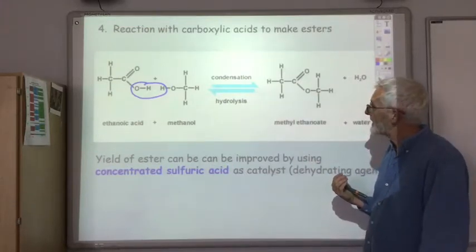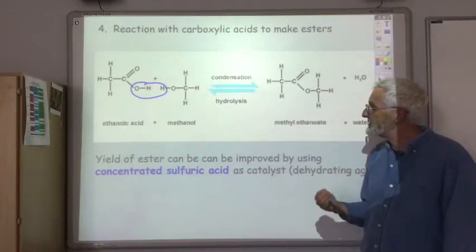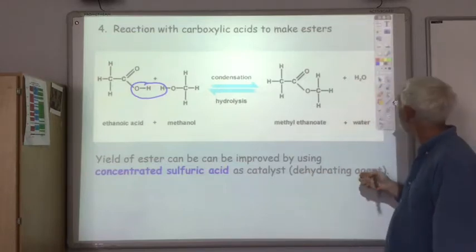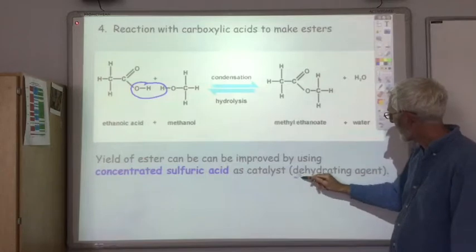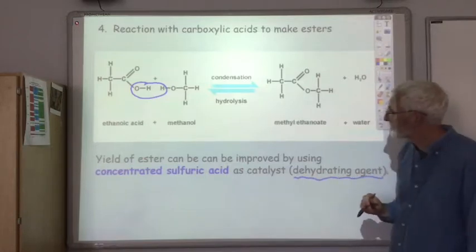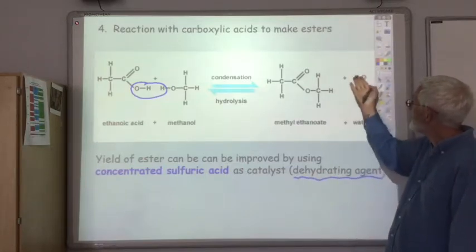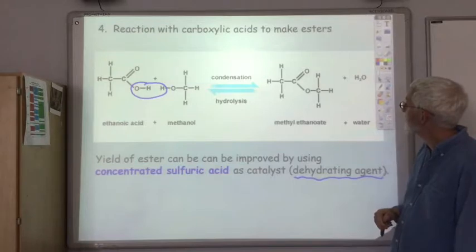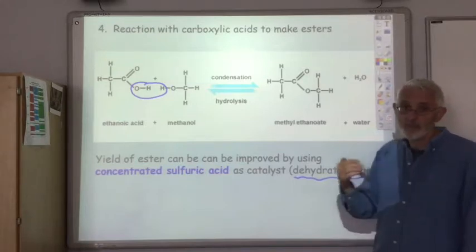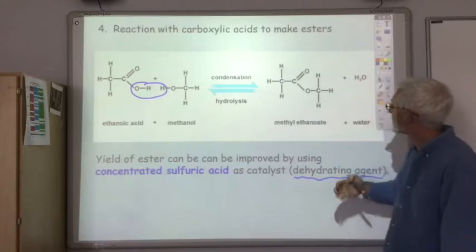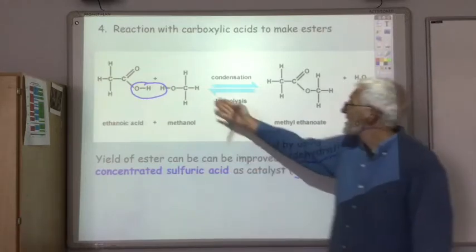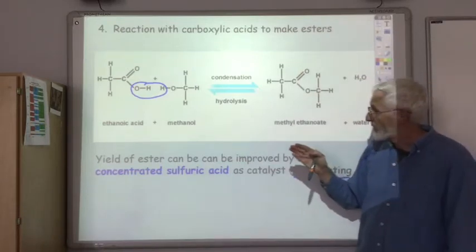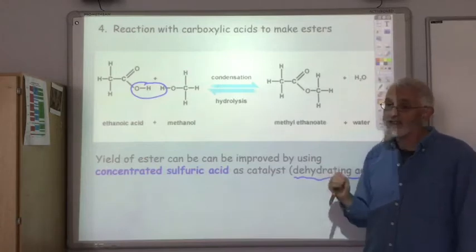But the improvement by using concentrated sulfuric acid is that concentrated sulfuric acid is a dehydrating agent. So if you remember that, it's a dehydrating agent. So that means it removes the water that is produced in the esterification reaction. And going back to equilibrium and Le Chatelier's principle, if you're removing one of the products, the equilibrium will shift to the right to replace it. So using concentrated sulfuric acid will improve the yield of ester.